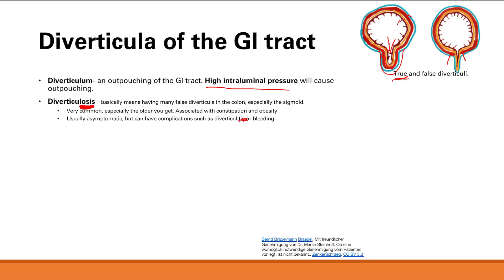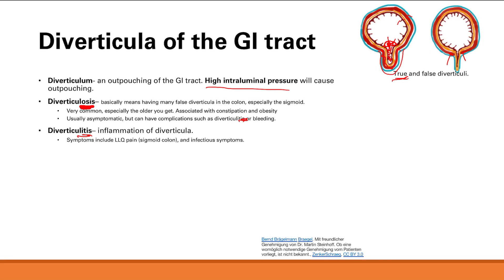Diverticulitis means inflammation of diverticula. It's due to infection — maybe some fecal matter gets stuck in the outpouching and infects it. You get classic infection symptoms. Most commonly you'll get left lower quadrant pain, because that's where diverticula most commonly occur, in the sigmoid colon.